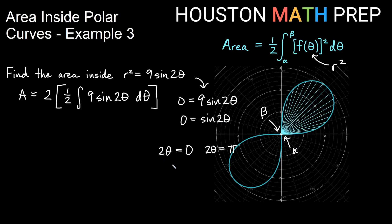If I divide by 2, I get θ = 0. And dividing the other equation by 2 gives θ = π/2. So I'll be integrating from 0 to π/2 to find my area.